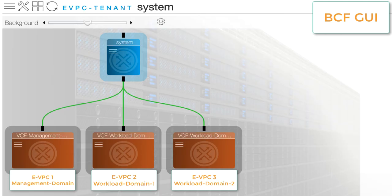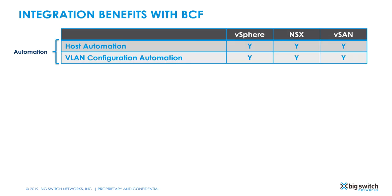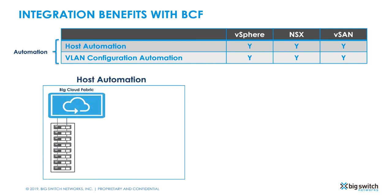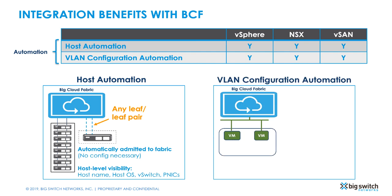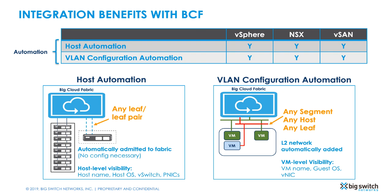Here on the BCF GUI, we can see the created eVPCs. Let's take a look at the benefits provided by the BCF eVPC for each of these workload domains. First, we will look at the automation benefits. With host automation, any new host connected anywhere in the fabric gets auto-detected — no need to manually input the switch and interface where the host connects to. With VLAN configuration automation, anytime a VM gets attached to a port group, the corresponding VLAN gets auto-configured in the fabric, and VLANs get automatically trunked on the appropriate interface, allowing instantaneous connectivity.